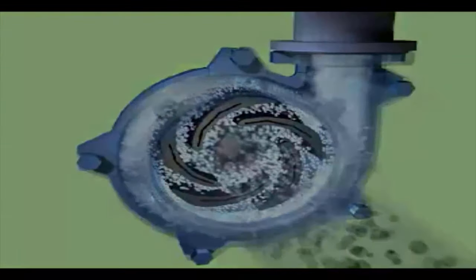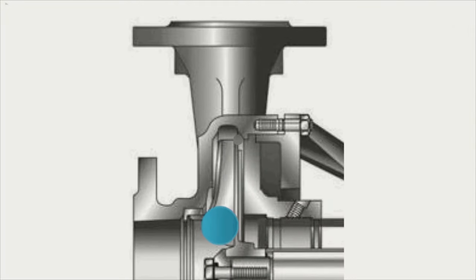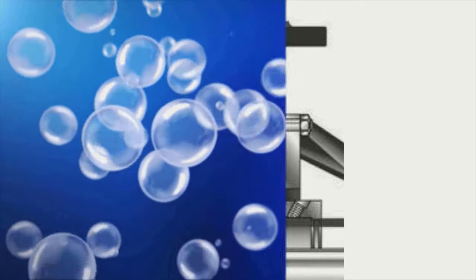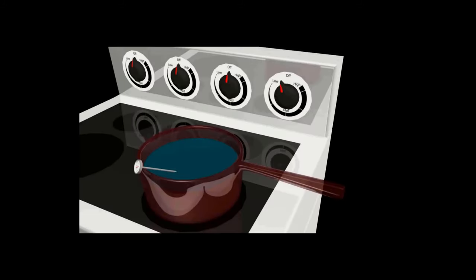Hello everyone, this is Karthik and welcome to the Pump Universe. Cavitation is the process of vapor bubble formation, then its journey towards implosion and microjet formation, leading to material erosion. Let's look at each phase in detail. Phase one is the formation of vapor bubbles — there are two possible reasons for a liquid to transform into a vapor.